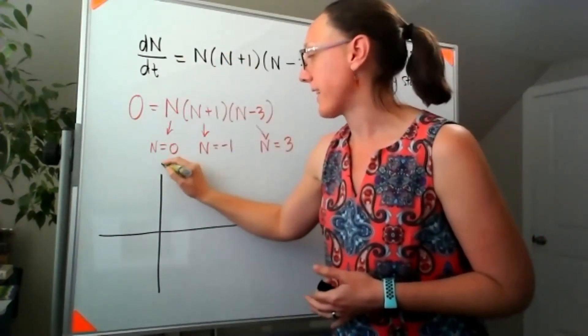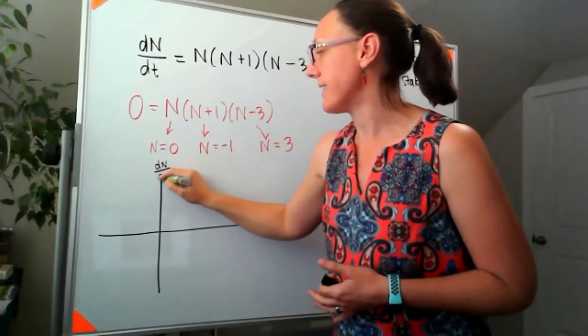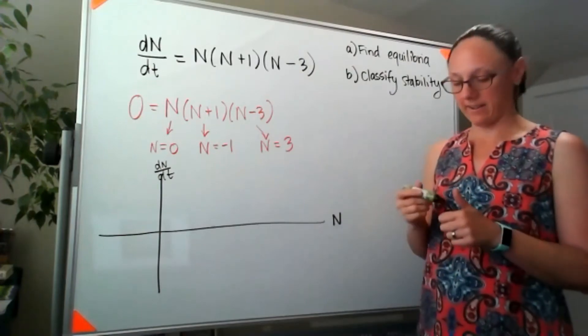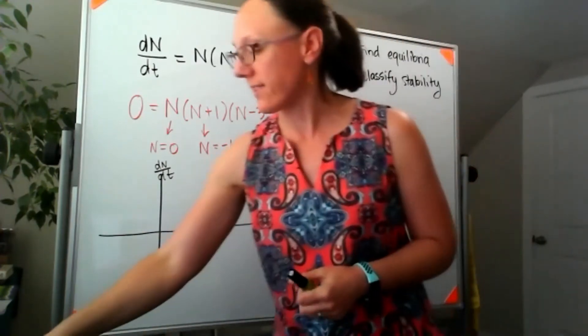So my vertical axis here is going to be the dN/dt axis and my horizontal axis will be the n axis. We talked about this a little bit on Friday.